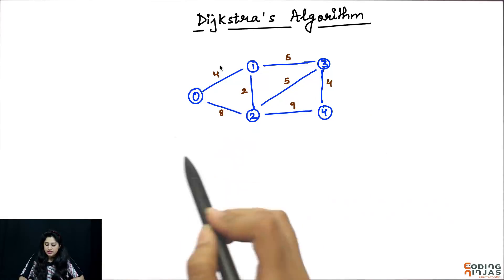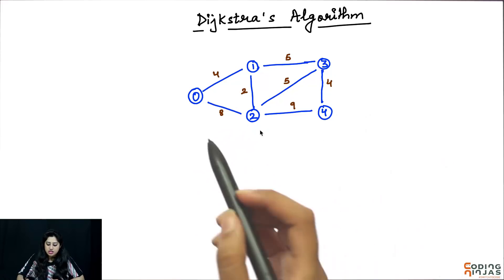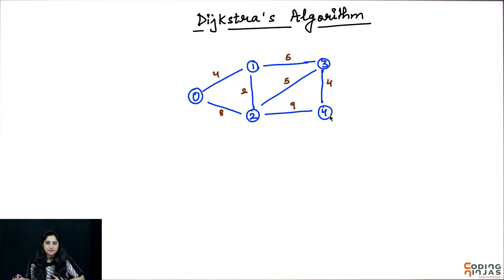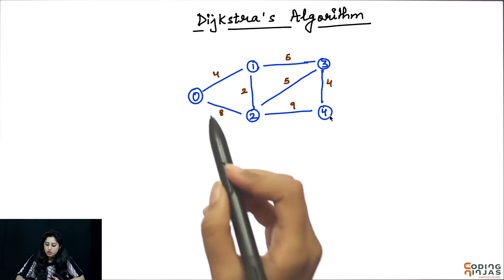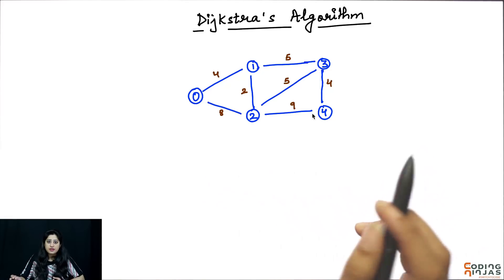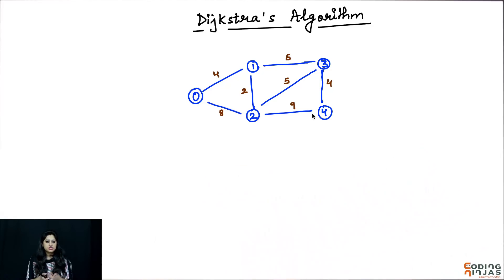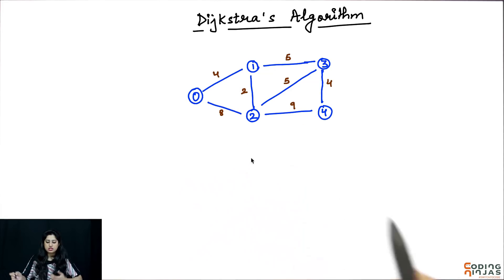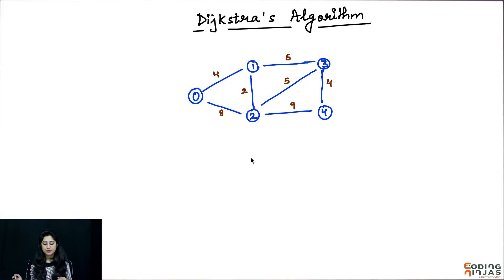Let's say the graph that I have is something like this. Mujhe 0 se 4 tak ka shortest distance nikalna hai agar, tho Dijkstra's algorithm hume woh shortest distance basically la ke dene waala hai. Ek aur variation Dijkstra's algorithm ka that we can use is, ke hum 0 se saare nodes ka bhi shortest distance nikal sakti hai.